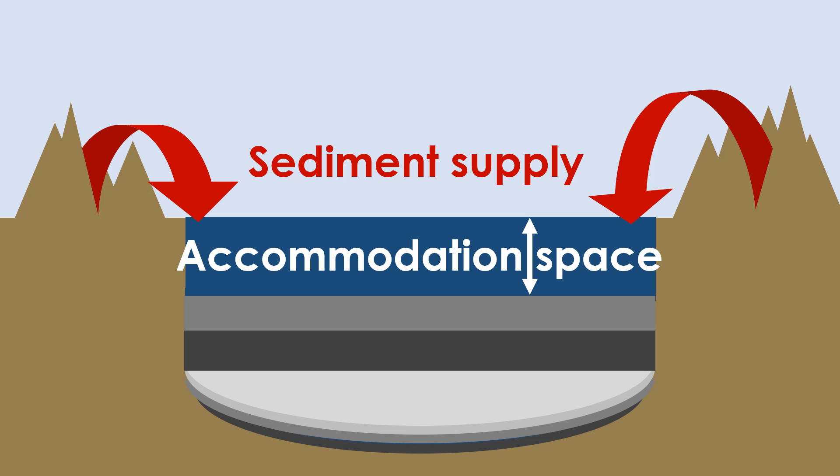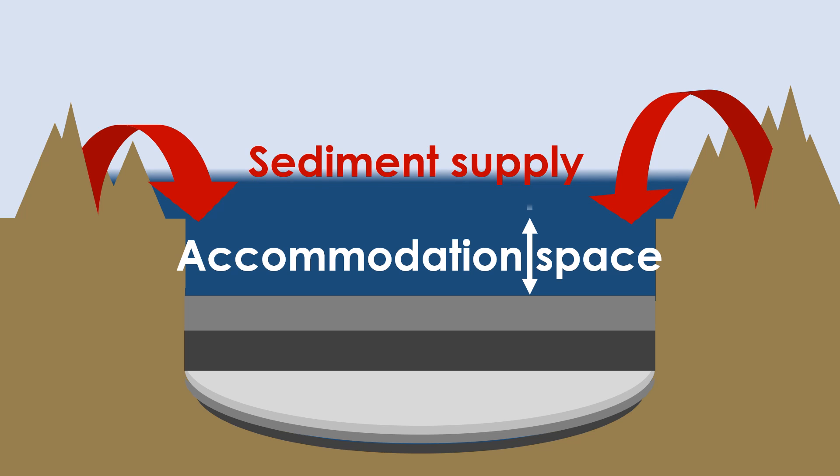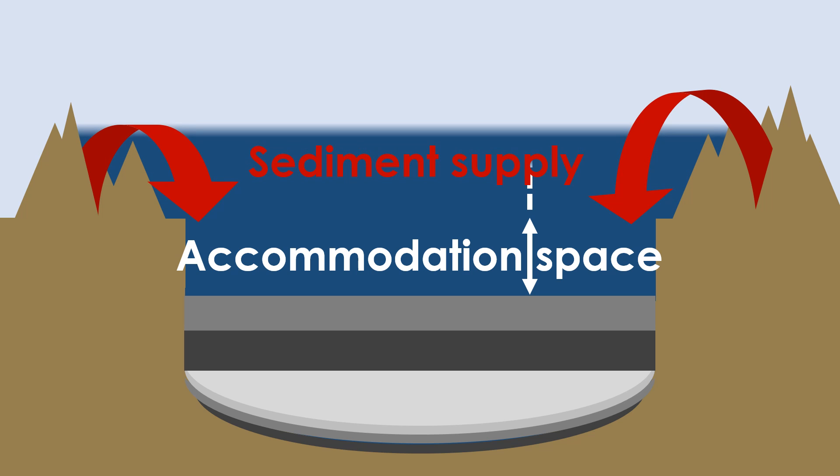If sea level rises, the amount of accommodation space increases within basins connected to the ocean. The opposite is also true. A fall in sea level causes accommodation space to shrink.